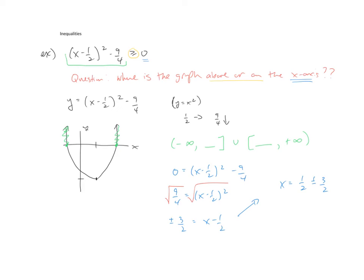So those are going to be my two points that I'm searching for. The first one might be 1 half plus 3 halves, and the other one would be that 1 half minus 3 halves. So now when I clean this up,